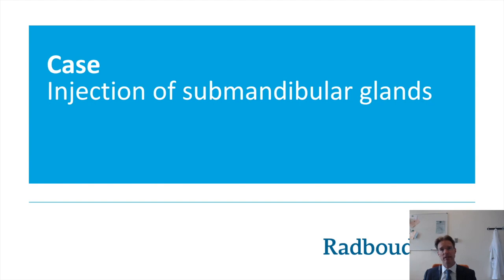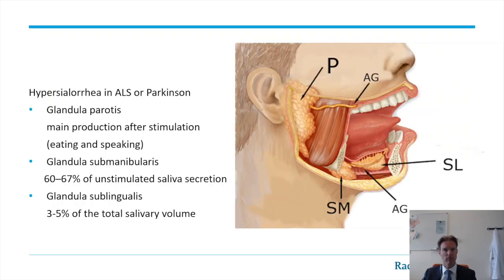The next case is a patient with hypersialorrhea where injection of the submandibular gland is shown. Ultrasound can be really helpful in injecting these glands. It is often performed in ALS patients or Parkinson's patients with hypersialorrhea. There are three glands, of which two are the most important to inject. The first gland is the sublingual gland, which only produces three to five percent of the total salivary volume.